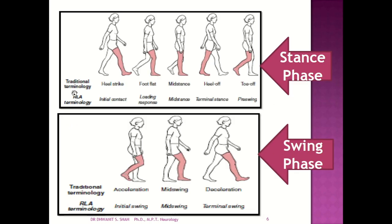In the stand phase, the traditional terminology is heel strike, which corresponds to foot flat in the next phase. In RLA terminology, it is called initial contact and loading response. Mid-stance is called mid-stance. Heel-off is called terminal stance. Toe-off is called pre-swing. In the swing phase, acceleration is called initial swing, mid-swing remains mid-swing, and deceleration in RLA is called terminal swing.